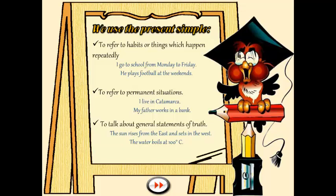Acá tenemos los usos del presente simple. El primer uso es para referirnos a hábitos o cosas que suceden repetidamente en nuestras vidas, o sea hablamos de rutinas que hacemos todos los días. Por ejemplo, 'voy a la escuela de lunes a viernes' es un hábito, es una rutina. El segundo ejemplo: 'él juega al fútbol los fines de semana' — en este caso solamente él va a jugar fútbol los fines de semana, no durante la semana. Es un hábito que él tiene.